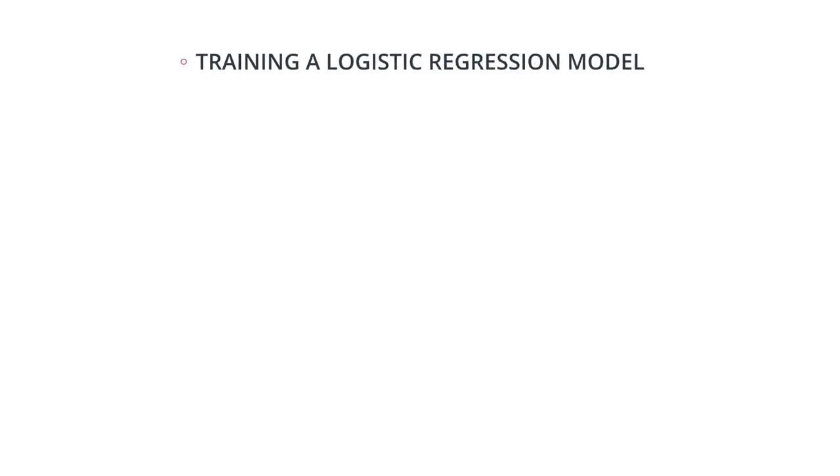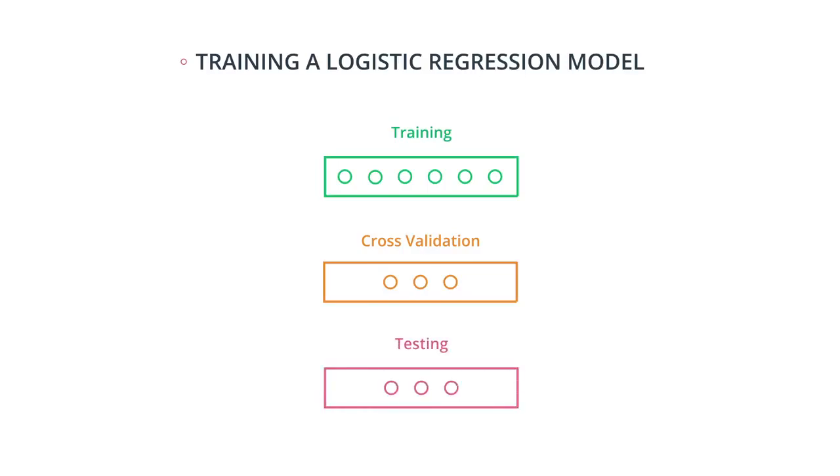So here's a summary of what we do in machine learning. First, we train a bunch of models with our training data. Then we use the cross-validation data to pick the best of these models. And finally, we test it with the testing data to make sure our model is good.